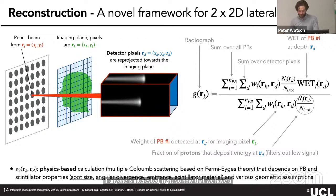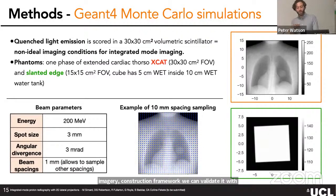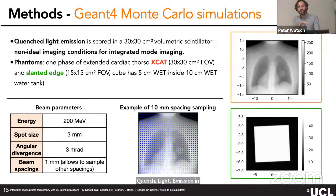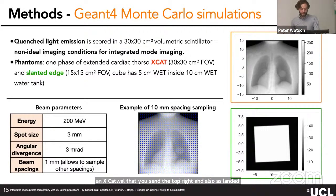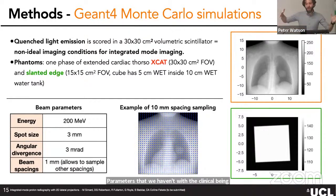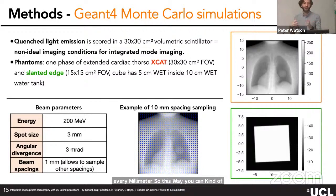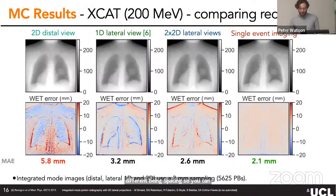With a working device and reconstruction framework, we validated using Monte Carlo simulations — specifically Geant4 simulations of quenched light emission in a 30×30 cm² volumetric scintillator to reproduce real-life conditions. The phantoms used were an extended cardiac torso, the XCAT phantom, and a slanted edge phantom for estimating system resolution. Beam parameters were selected to match our clinical beam, and we generated a large phase space of hundreds of gigabytes sampled at every millimeter.